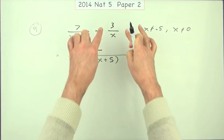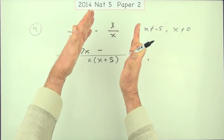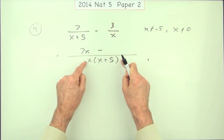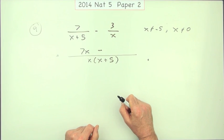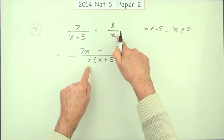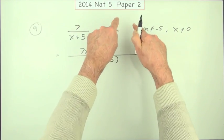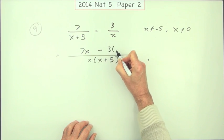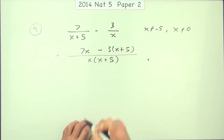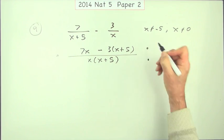This fraction has to be changed into an equal fraction with this new bigger denominator. How much bigger? Well, I've already got the x, it's x plus 5 times bigger, so you make the top x plus 5 times bigger, so it'll be 3 multiplied by x plus 5. That's your second mark.